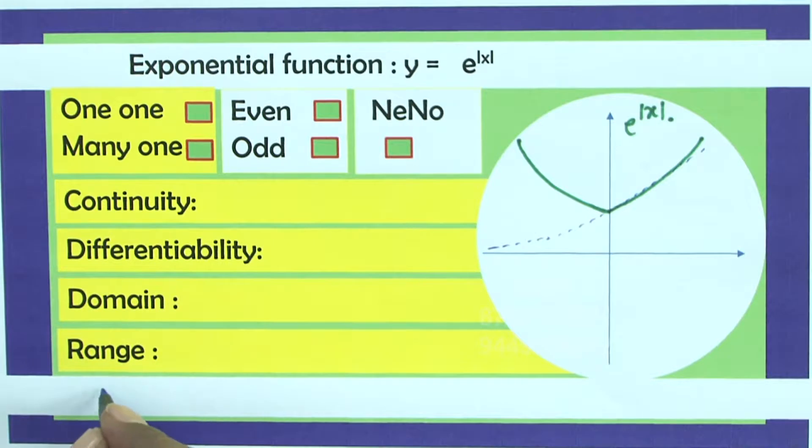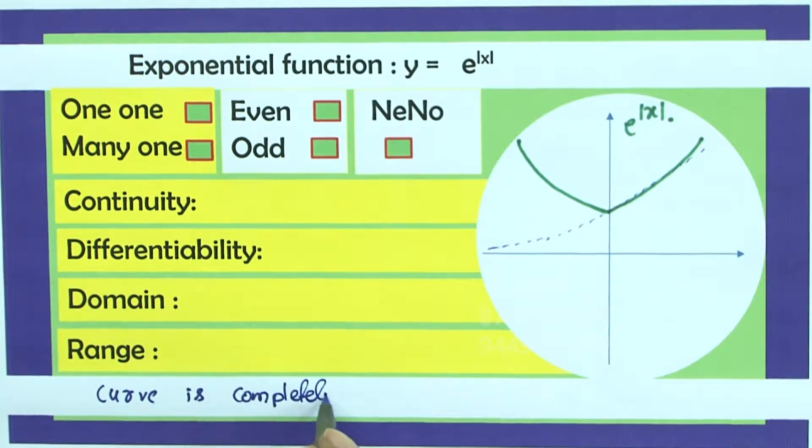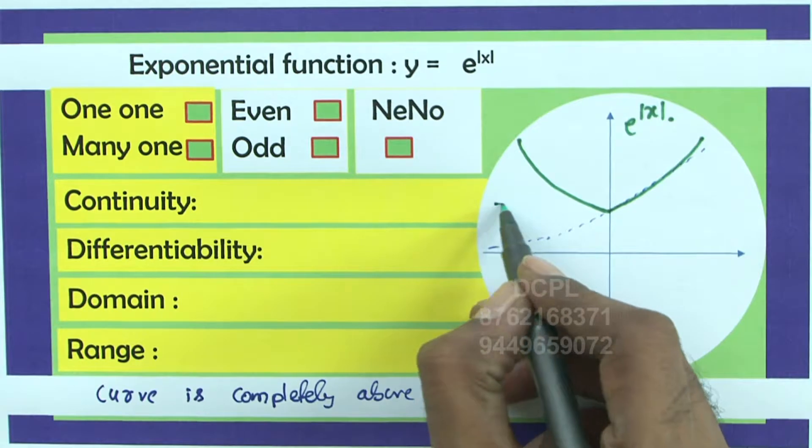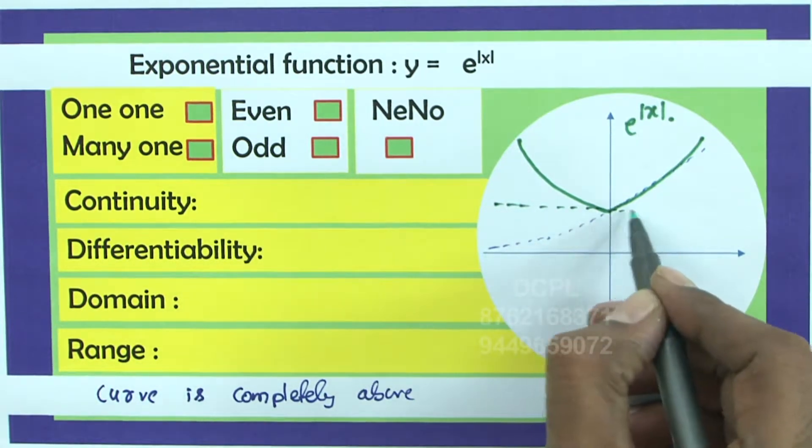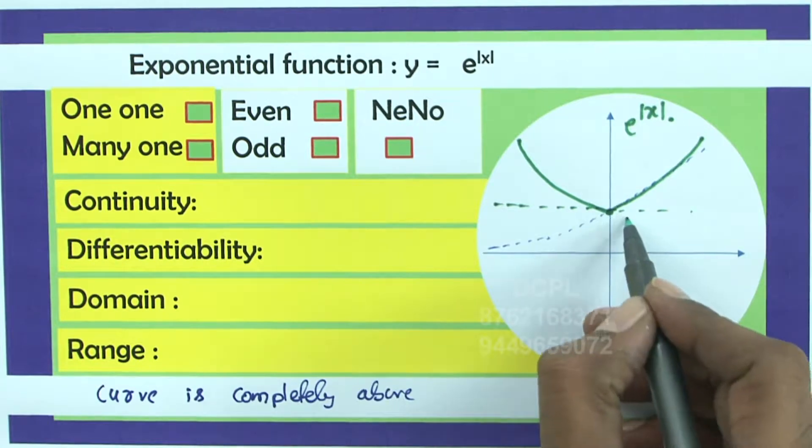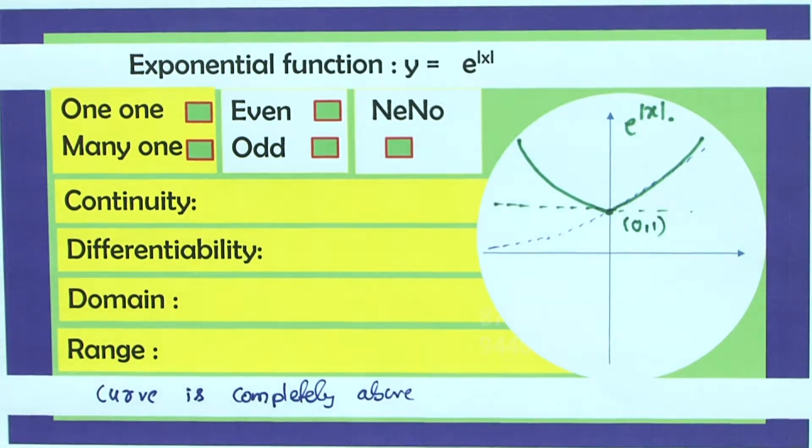So let us not talk about asymptotes. But the graph or the curve is completely above one particular line. What is that line dear students? Above this line, of course it is touching this, no doubt about this, above this particular line. What is this?